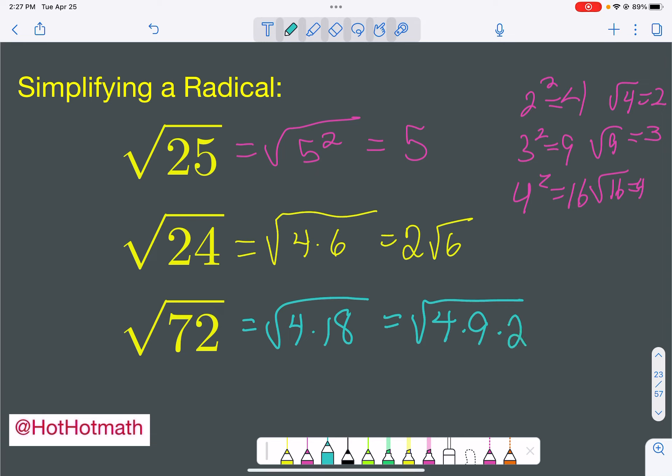And you can check. 4 times 9 times 2 is 72. Now, we can individually take the square roots of the ones that we know. The square root of 4, the square root of 9. The square root of 4 is 2. The square root of 9 is 3.